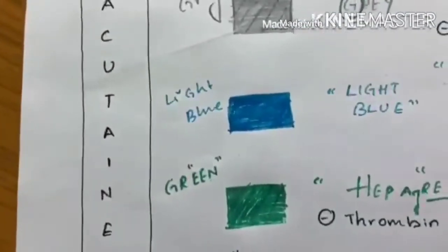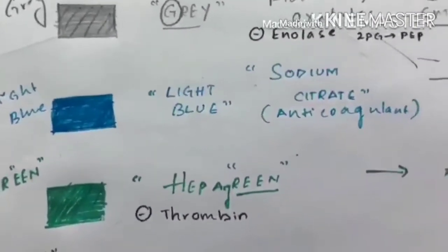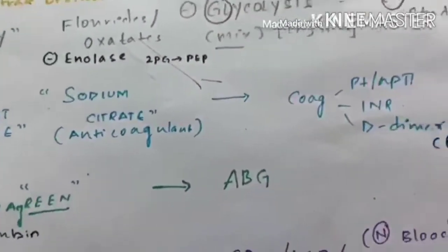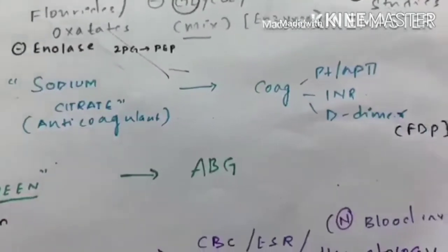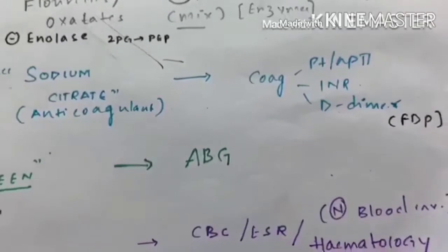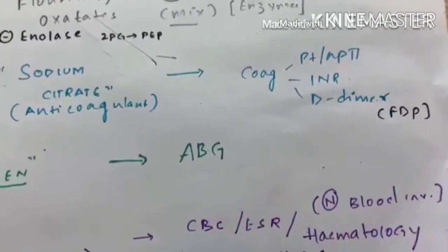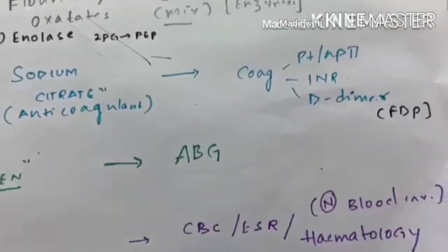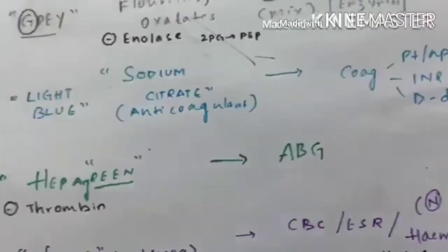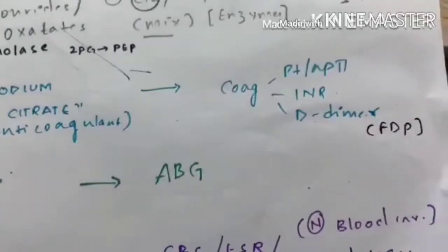Light blue is the most important one, containing sodium citrate which is a reversible anticoagulant useful for coagulation studies. Especially PT, PTT, INR and also for D-dimer. We know that D-dimer is fibrin degradation product, part of inhibition of coagulation. So light blue bottle contains sodium citrate, useful for coagulation studies.